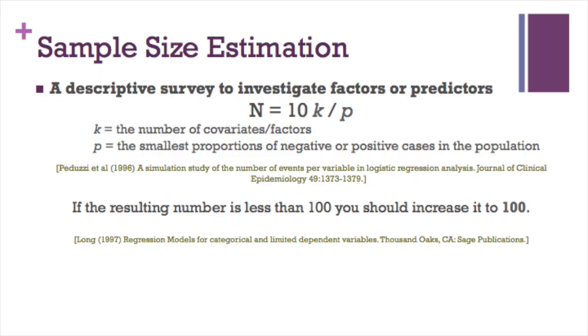For a descriptive survey to investigate factors or predictors, we need to know the number of covariates or factors, k, and p, that is the smallest proportion of negative or positive cases in the population. If the resulting number is less than 100, you should increase it to 100.